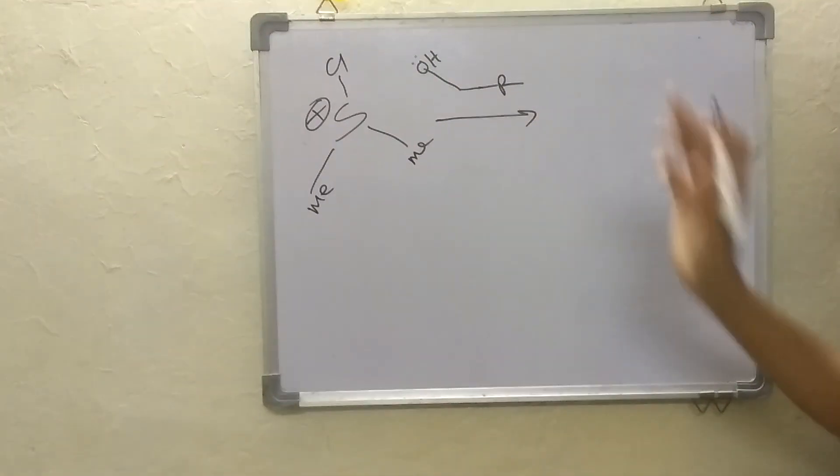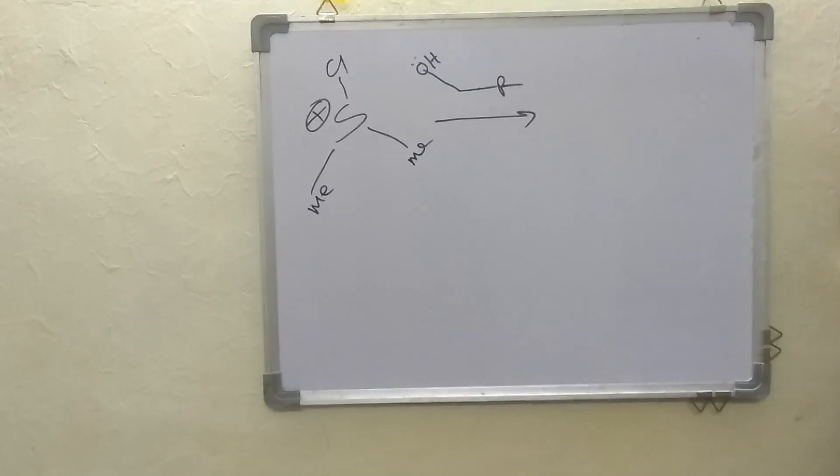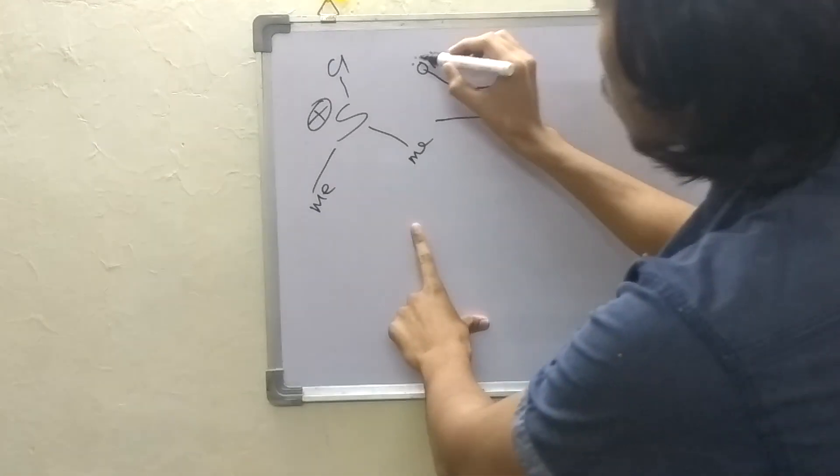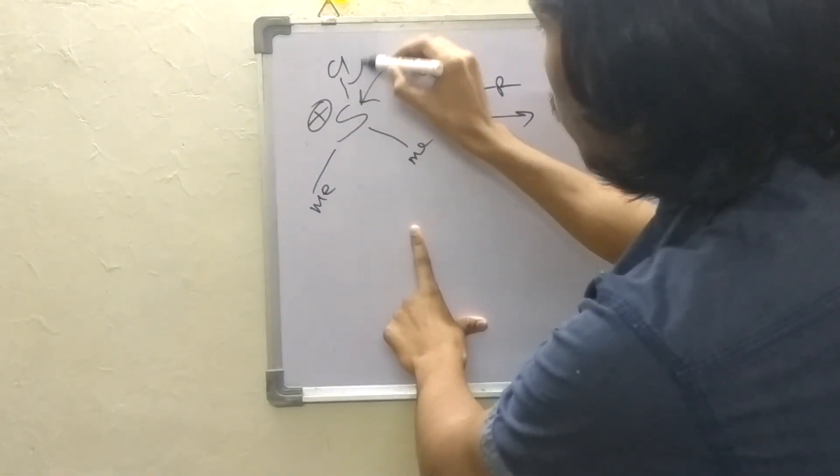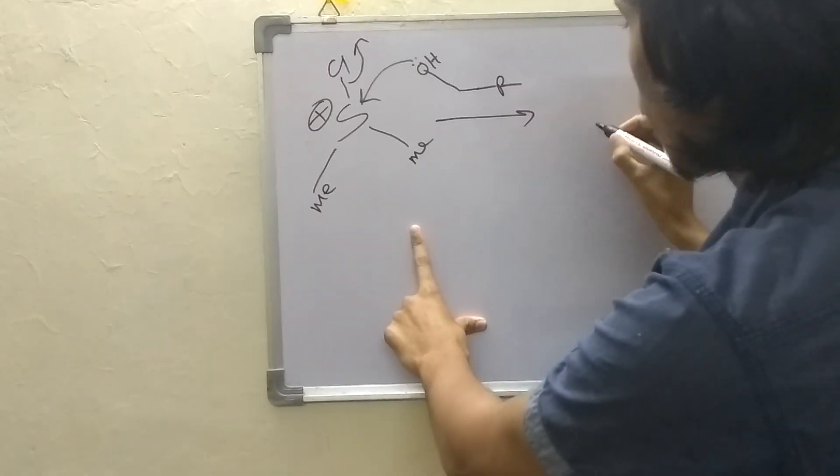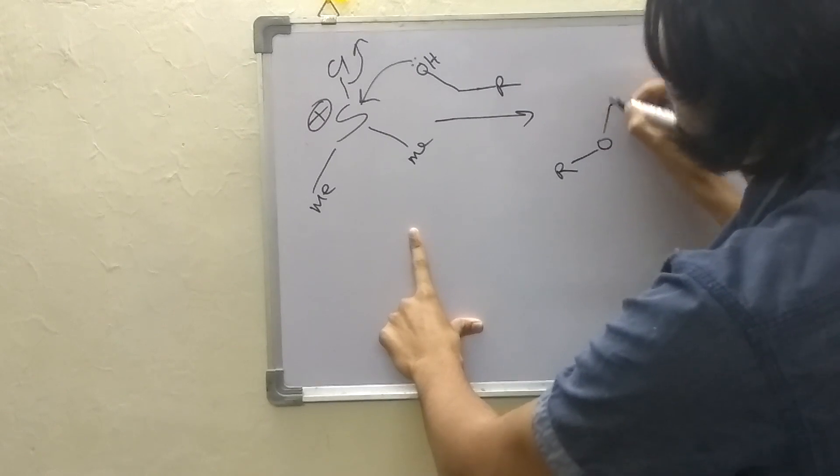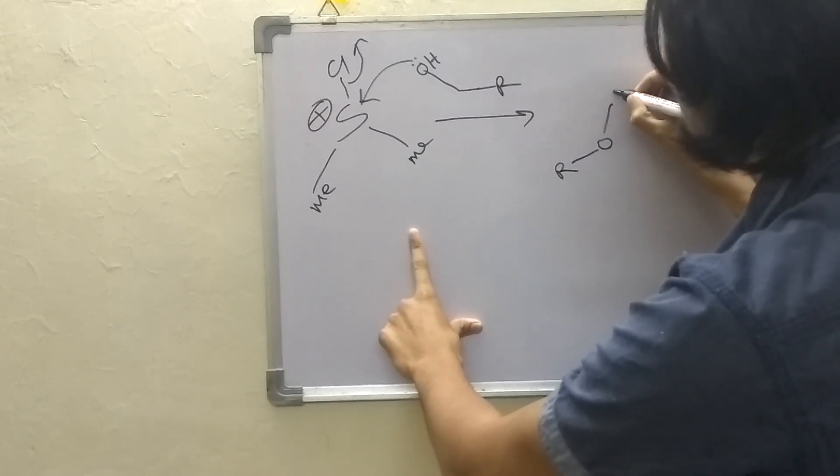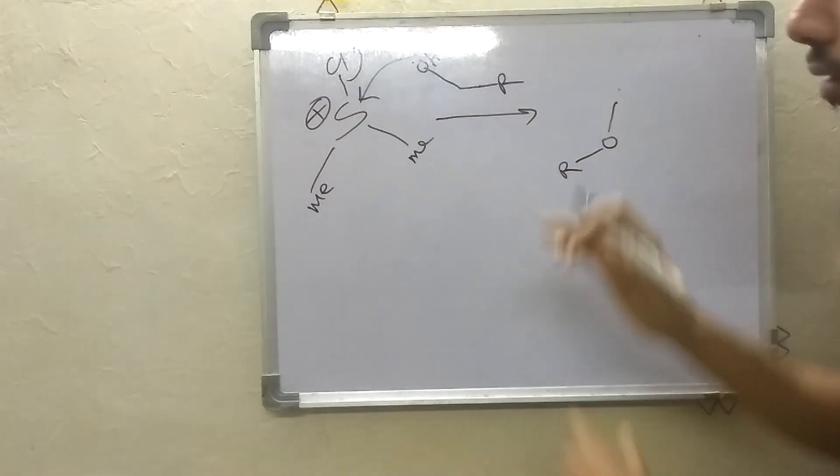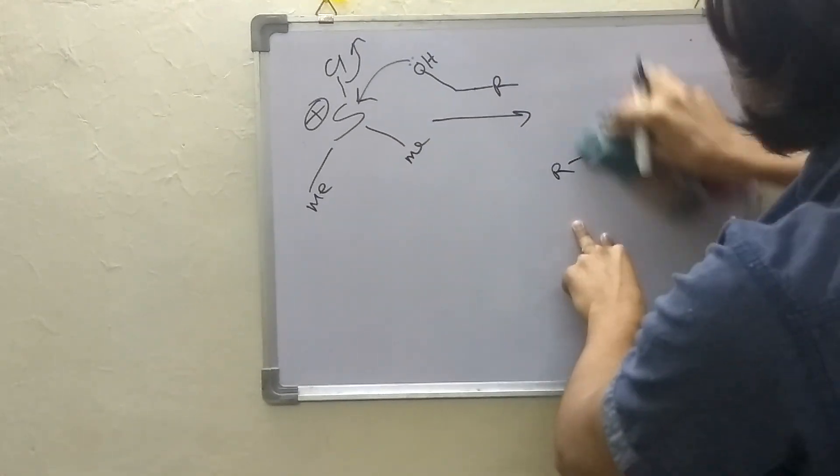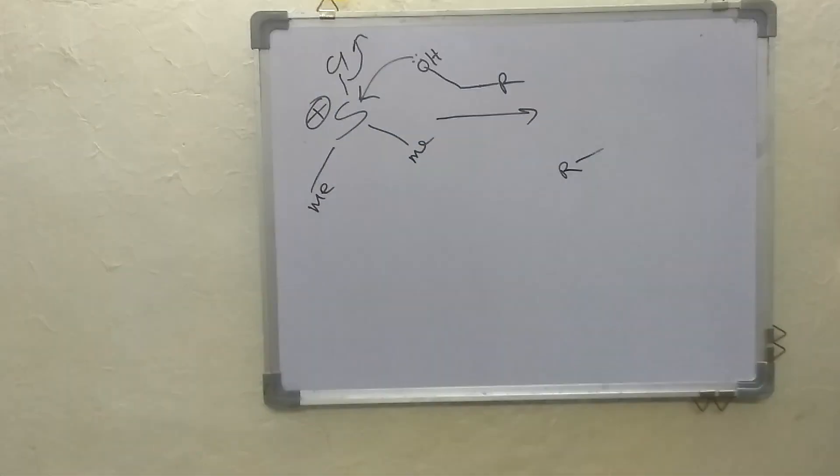What will happen is that this oxygen lone pair will add up to the sulfur and this chlorine will be expelled so we will get like this. Okay so sorry I did a mistake, it will be like this.